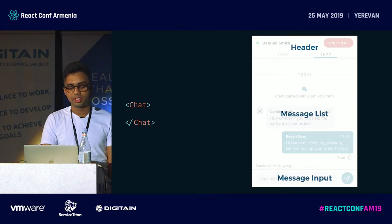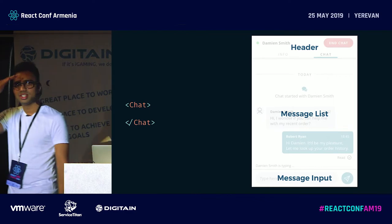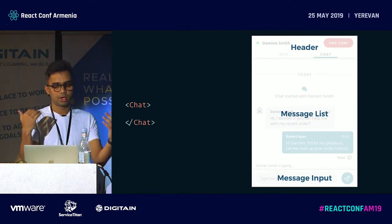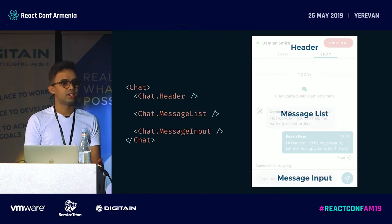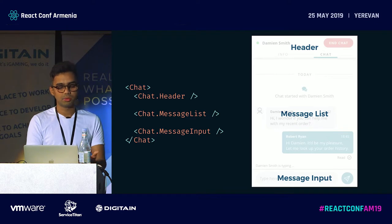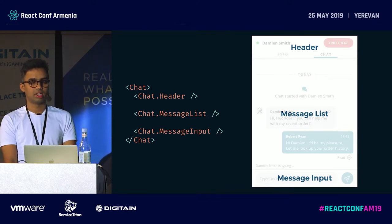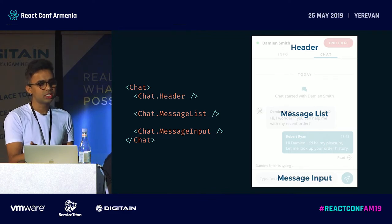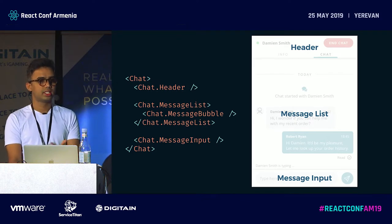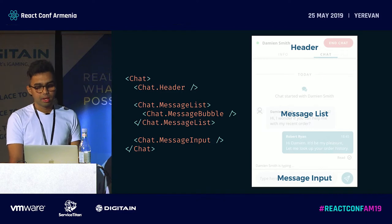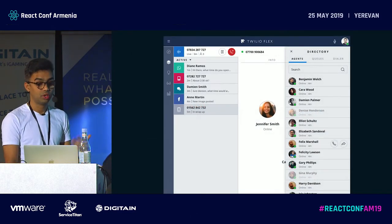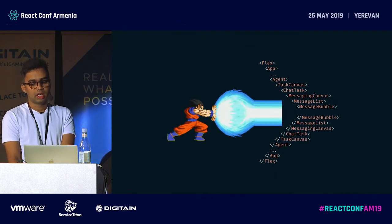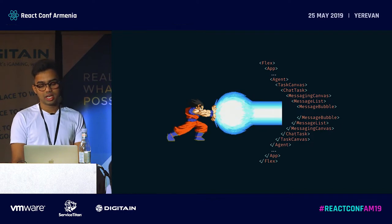There's another way to implement that: compound components. With compound components, you can have multiple children — like in a chat app: header, message list, and message input. Any time you want to replace the header, you add anything to the header component and it will pass the right props internally. But if you think about a whole application like Twilio Flex, and you need to change a message bubble that's somewhere deep in the component tree, it could become really deep and this is also not scalable for us.